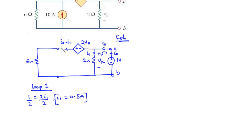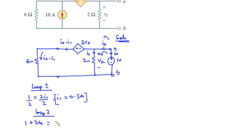Next, we consider the bigger loop 2 and try to find the value of I0. The source voltages — we have 1V, and if we take the anti-clockwise direction, they are all in line, so that's going to be 1 plus 2Vx. For loop 2, we have the source voltages 1 plus 2Vx equal to the sum of voltage drops. The current in this branch is I0 minus I1, so that is 6 times (I0 minus I1). Notice that Vx equals the voltage across the 2-ohm resistor, giving us 2I1.